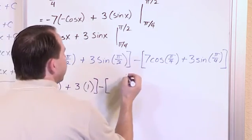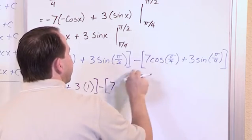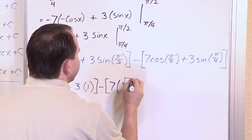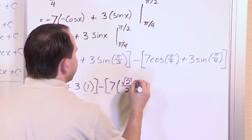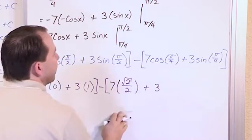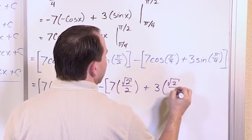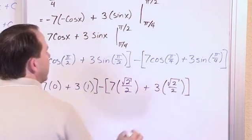And then inside this bracket, we have the 7 from here. What is the cosine of π/4? You should remember that is the famous √2/2, plus 3 times the sine of π/4, which is also √2/2.